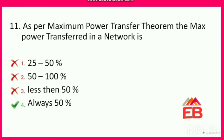Next: as per the maximum power transfer theorem, the maximum power transfer in a network is? Options are 25–50%, 50–100%, less than 50%, or always 50%. As per the theorem, whenever there is maximum power transfer, the efficiency is 50% of the power supplied by the source. So it is always exactly 50% — neither less nor more. Option 4 is correct.